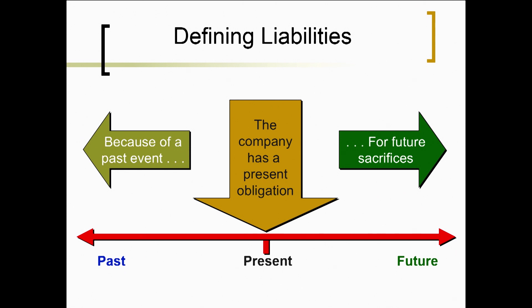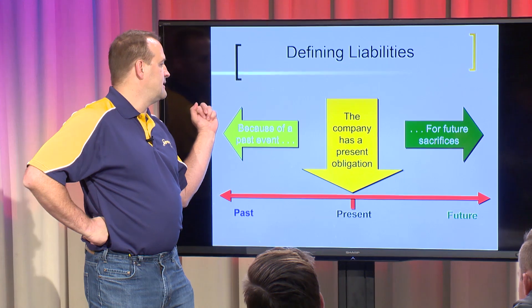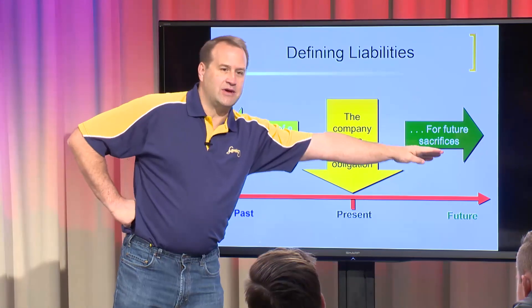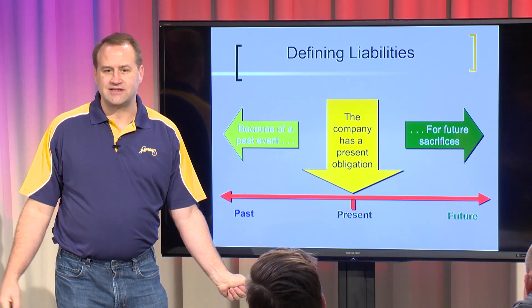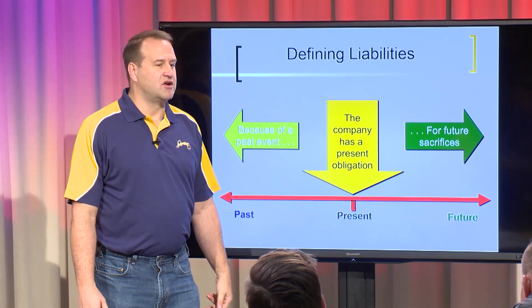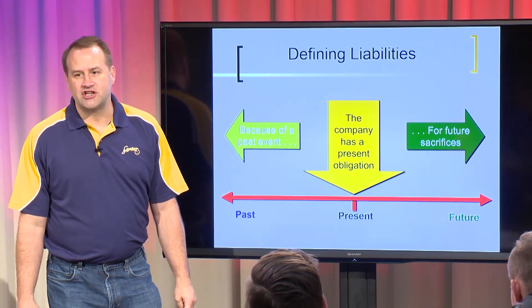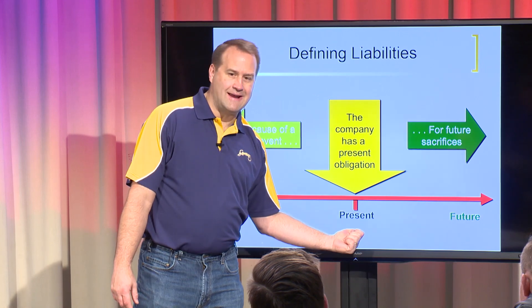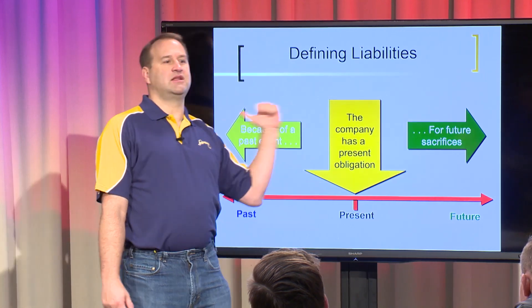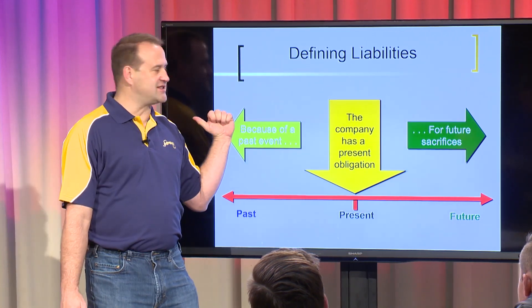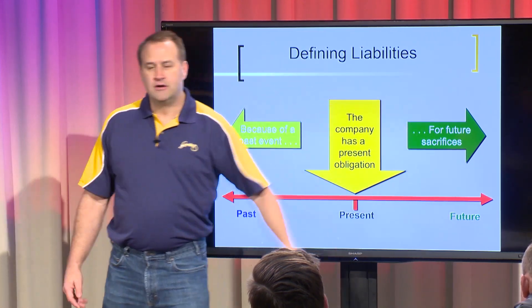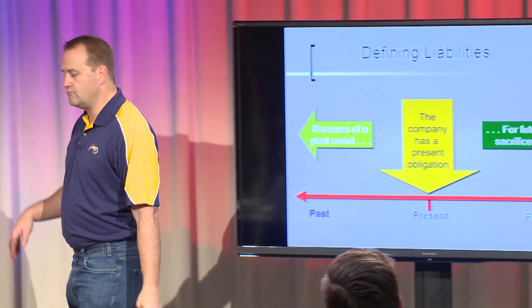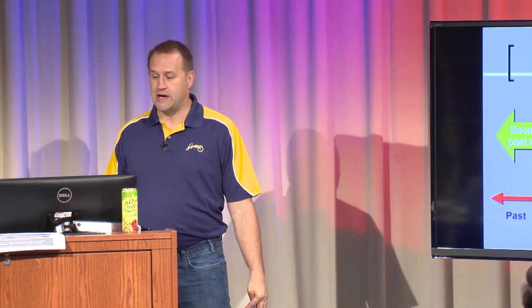A liability is something we owe right now in the present for something that happened in the past, and in the future we have to make some sort of sacrifice. So if I buy a television on credit, I have an obligation right now because in the past I purchased that TV, and in the future I'm going to have to sacrifice and give them some cash.